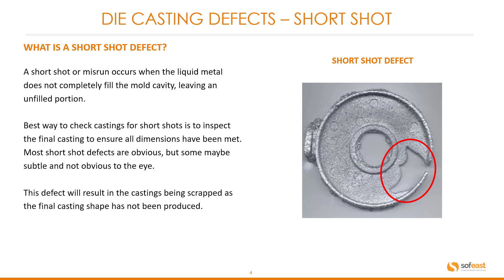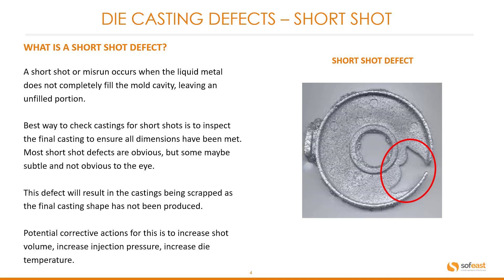This defect will result in castings being scrapped as the final casting shape has not been produced. Potential corrective actions for this are to increase shot volume, increase injection pressure, and increase die temperature.